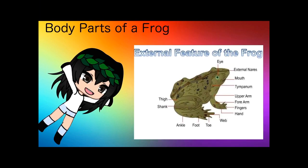Here's a chart I found on the internet that describes all of the body parts of the frog: the eyes, external layers, the mouth, the tympanum, the upper arm, the forearm, the fingers, the hands, the web in between the toes, the toes themselves, the foot, the ankle, the thigh, and the shank.